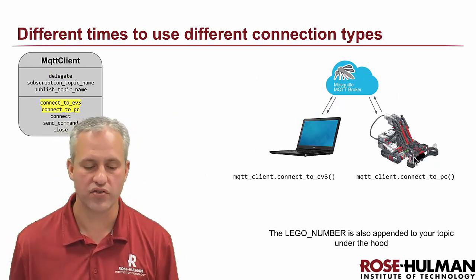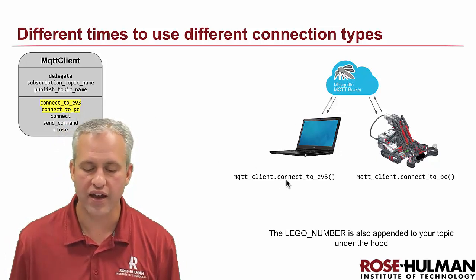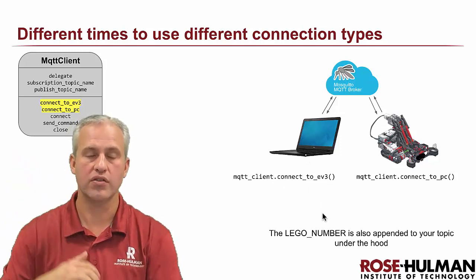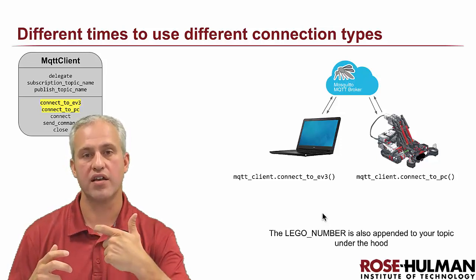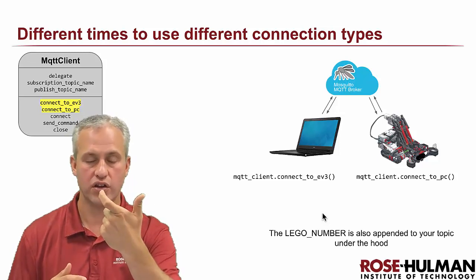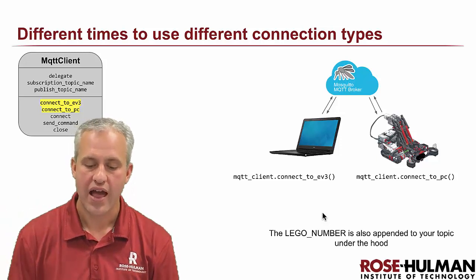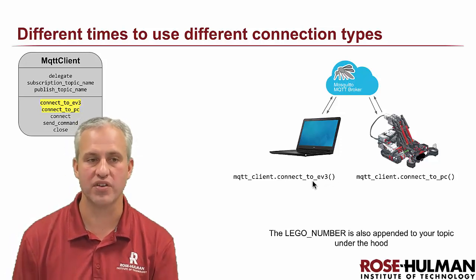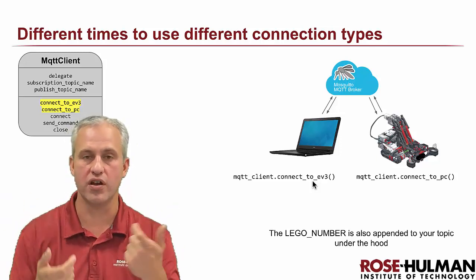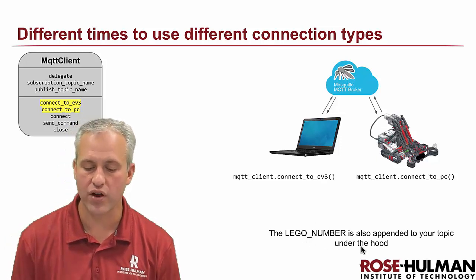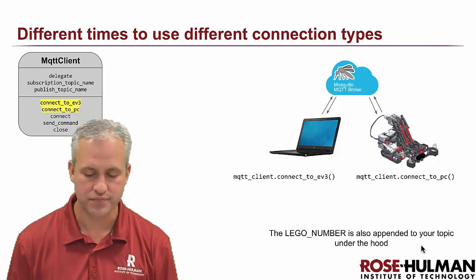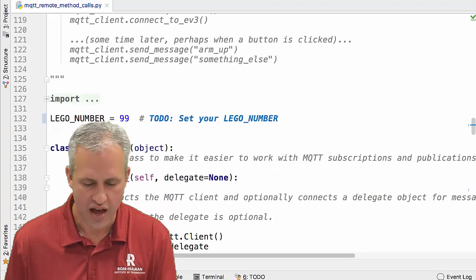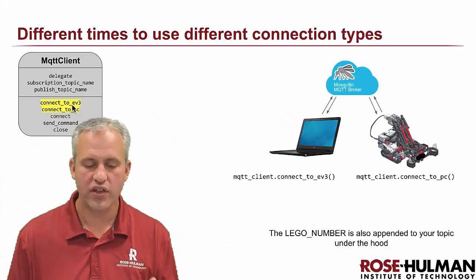The next thing are the different connect methods — there are three total. One is connect to EV3, which would be a command you do on your computer. What connect does is it connects to the broker, and it also establishes what topics you're subscribed to and what messages you're publishing to. The nice thing about this is we pick those topic names for you — we call them something like Message4PC or Message4EV3, and those become the subscription and publish topic names. The Lego number is appended on there, so you'll only hear your team. That Lego number is set over in this MQTT Remote Method Calls file, and you'll set this during class.